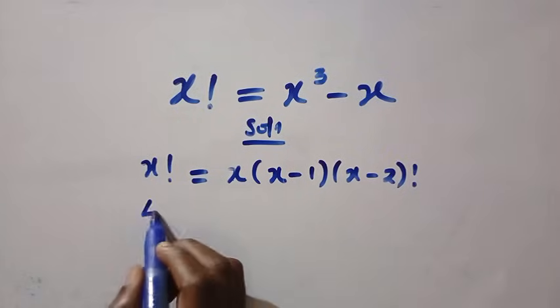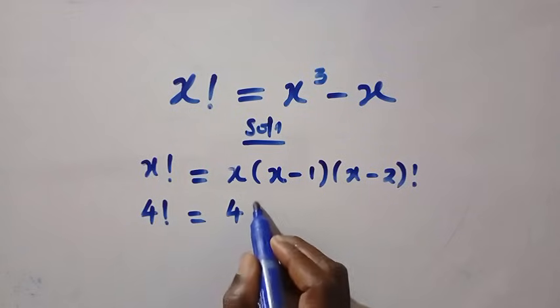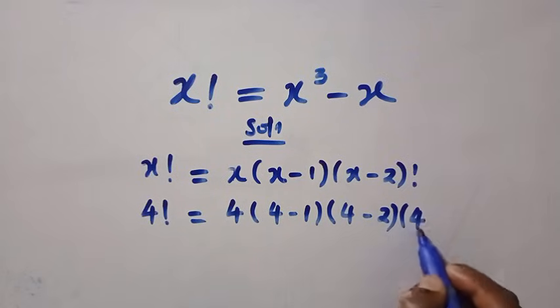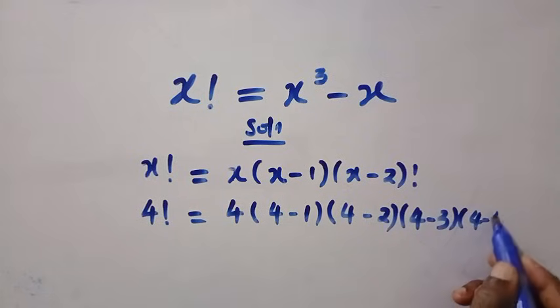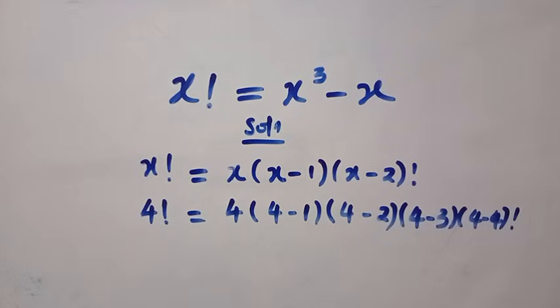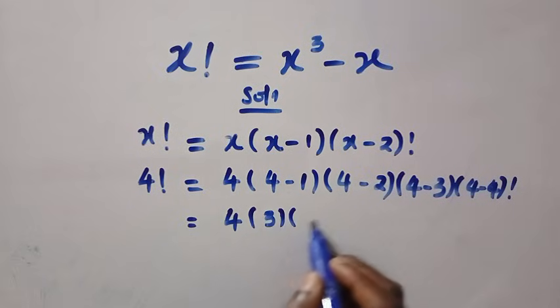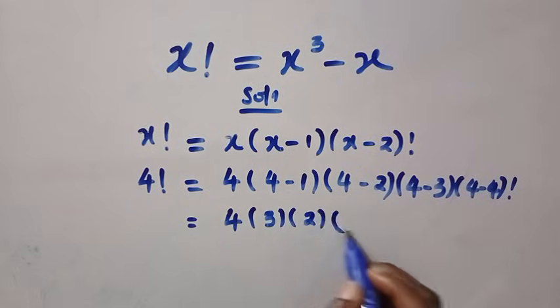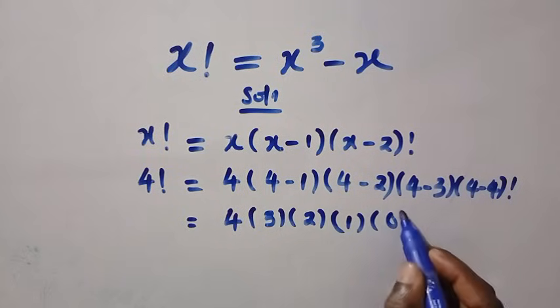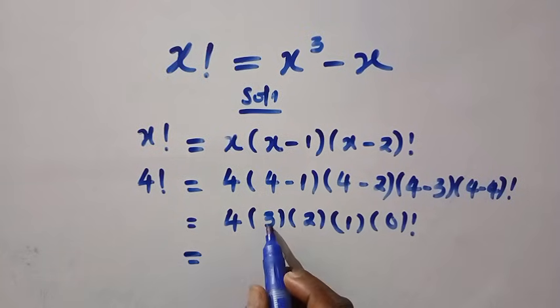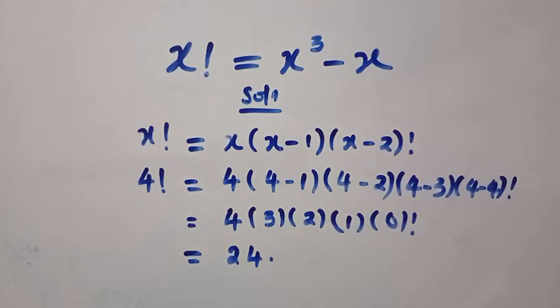And using a number, if we have 4 factorial, 4 factorial is 4 bracket 4 minus 1, multiply by 4 minus 2, multiply by 4 minus 3, multiply by 4 minus 4. We are going to stop here because the next number will be negative, and we don't have to have anything like negative, so we stop at 0. So this gives us 4 bracket 4 minus 1, that is 3, bracket 4 minus 2, that is 2, bracket 4 minus 3, that is 1. And here is 0 factorial. But 0 factorial gives us 1. The whole of this gives 4 times 3 times 2 times 1 times 1, that is 24. 4 factorial gives us 24.